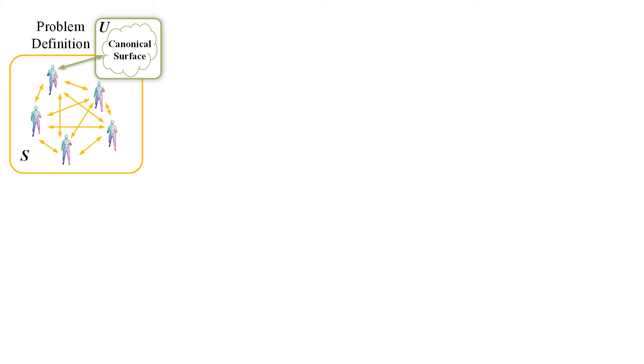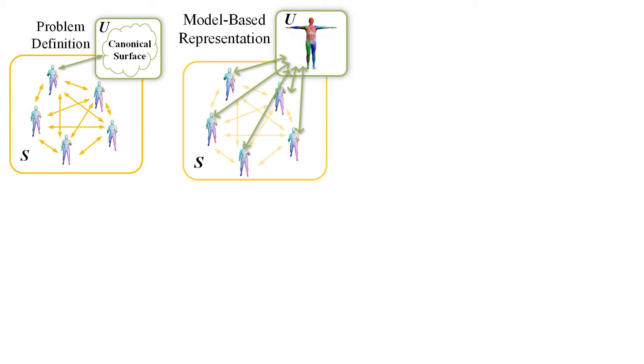the representation should model a global reference shape and the consistent deformation or correspondence between any deformed surfaces. The majority of dynamic representations are model-based. The canonical or reference shape is the template mesh and the deformed surfaces can be obtained through skinning functions.